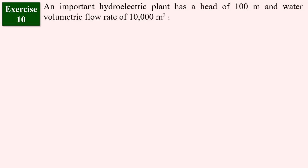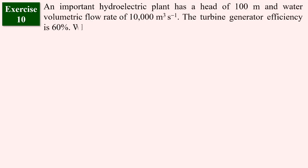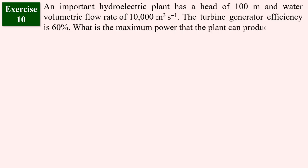Question number 10: An important hydroelectric plant has a height of 100 meters and a water volumetric flow rate of 10,000 cubic meters per second. The turbine-generator efficiency is 60%. What is the maximum power that the plant can produce?